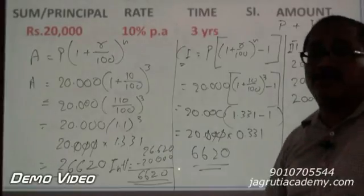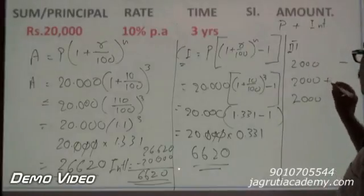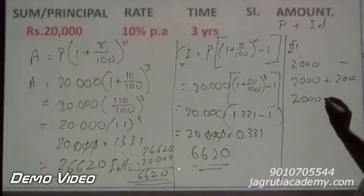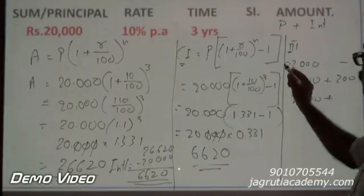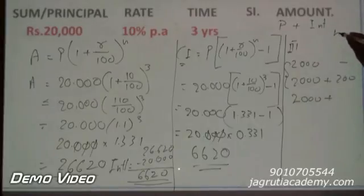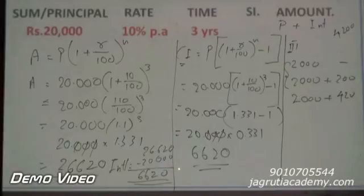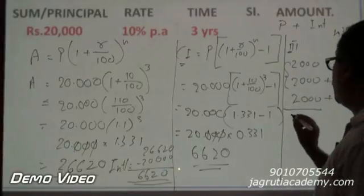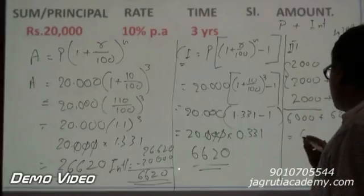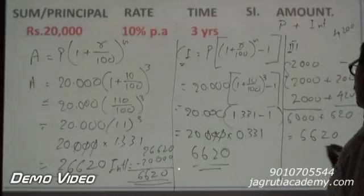First year, there is no interest on interest. Second year, 10% interest on previous interest which is 200. Third year, 10% on your previous interest which is 4,200 on which 10% which is 420. By adding this, I get this as 6,000 plus 620 which is equal to 6,620.